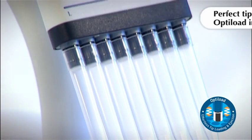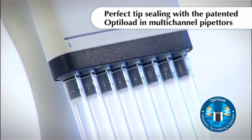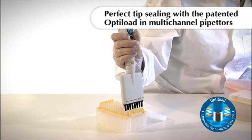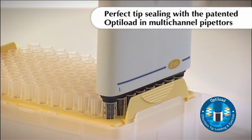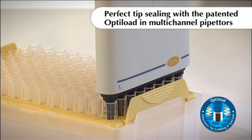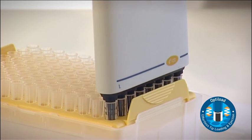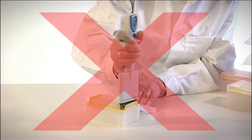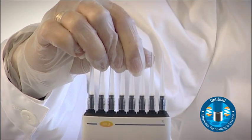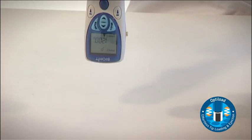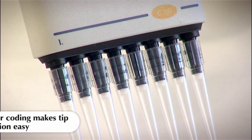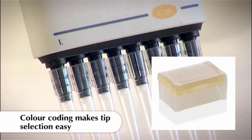The multi-channel pipettes of the E-Line range are equipped with special spring-loaded tip cones. We call it the Opti-Load Mechanism. This mechanism allows tips to be loaded with constant force to every channel without the need to press hard on the tip rack. Opti-Load also enables tips to be perfectly sealed to the tip cone. The color-coding on the pipette makes it easy to find the most suitable tip size.